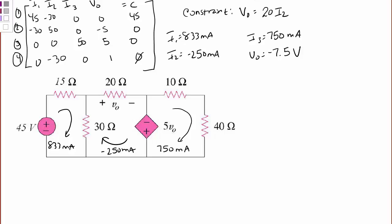So now let's look at some of our branch currents. The branch current for the 30 ohm resistor: we have a net 833 milliamps going down. Now since I2 is negative 250, that means although it looks like it's drawn to go into this node, it's really leaving this node. So I have 833 milliamps leaving to the left, 250 milliamps leaving to the right — that gives me a net 1.0833 amps flowing down through the 30 ohm resistor. Similarly, for the 5V0 dependent source, at this node I have 250 milliamps coming in from the left and 750 milliamps coming in from the right, giving me a net 1 amp up through that dependent source.